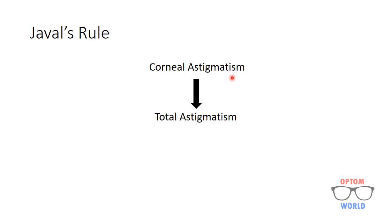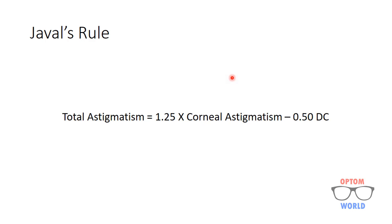Corneal astigmatism is measured by keratometry, and the formula used for Javal's rule is: total astigmatism equals 1.25 multiplied by corneal astigmatism, minus 0.50 diopter cylinder. This minus 0.50 diopter cylinder basically accounts for the lenticular astigmatism present in the natural lens of the eye. Minus 0.50 diopter cylinder is present in every natural lens and it is against-the-rule astigmatism.